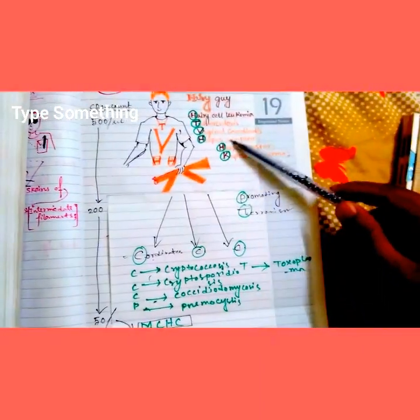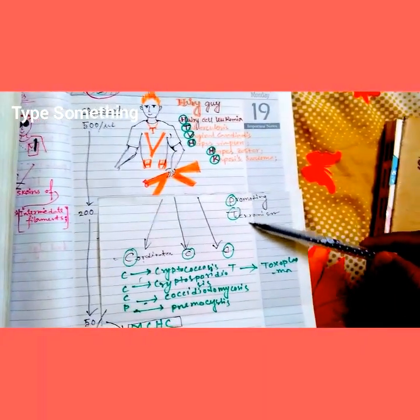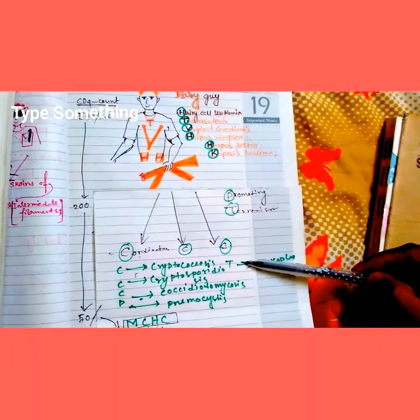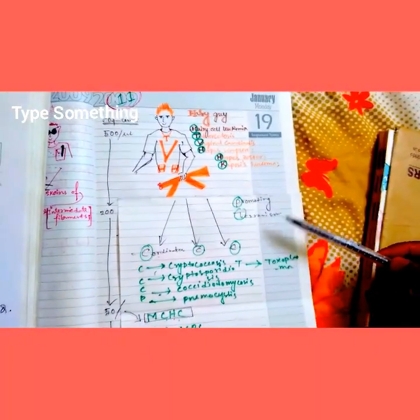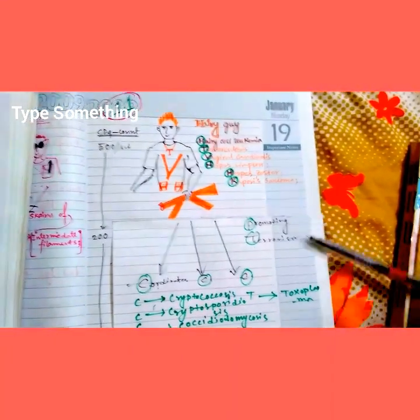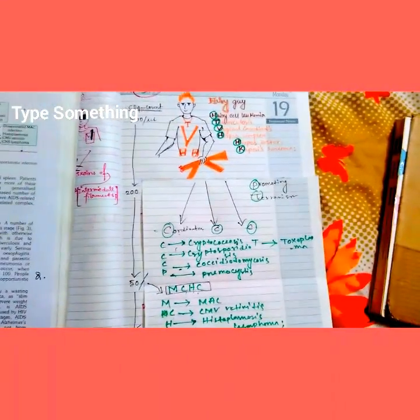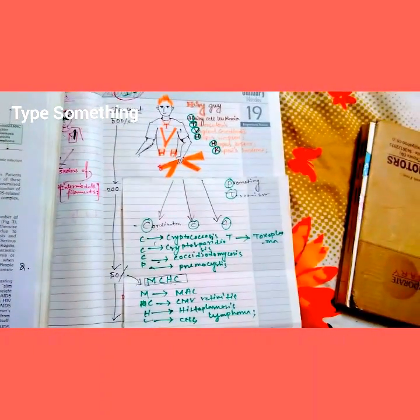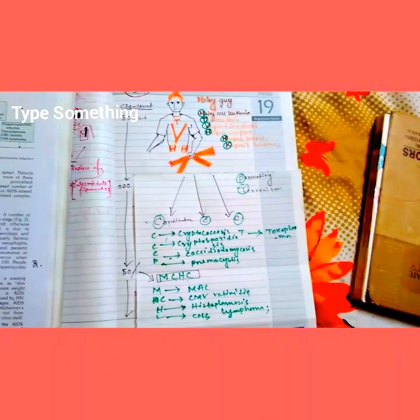The picturized mnemonic covers the hairy guy and the short story of promoting terrorism in three coordinates. This makes everything very easy to recall since it is picture-based. I hope all of you enjoyed my video — please like and share, thank you.